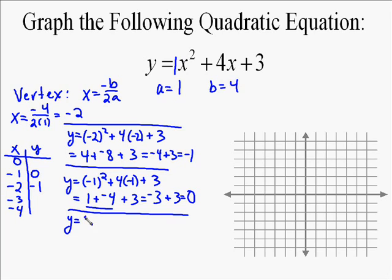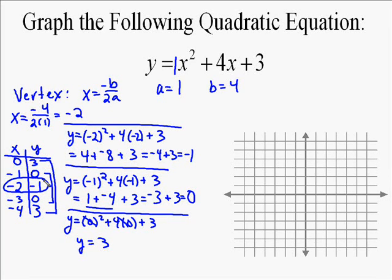And the easiest one to do, you love whenever x equals 0, because it's so easy. 0 squared is 0, 4 times 0 is 0 plus 3. So all you have left over is 3. So when we put 0 in for x, our y value, our y intercept is 3. By symmetry, if negative 1 was 0, then negative 3 results in 0. And then if 0 results in 3, then negative 4 has to result in 3, because we have this symmetry in the graph of our quadratic equation.